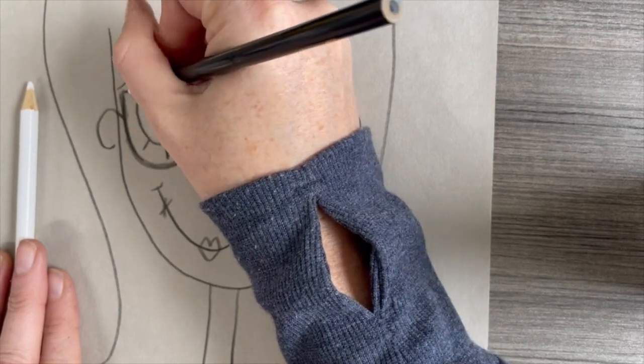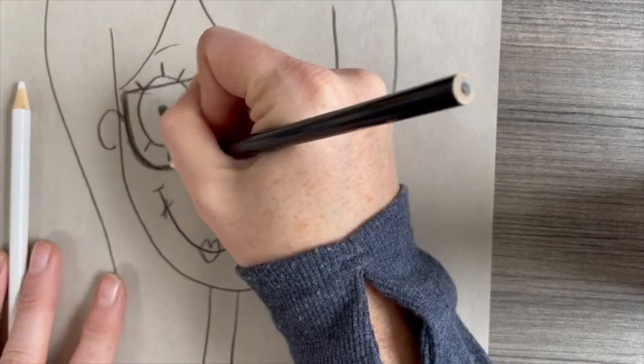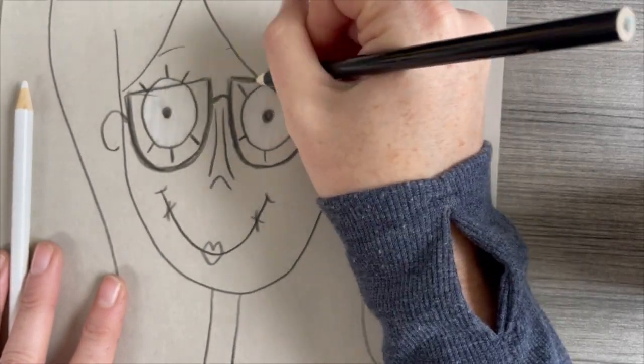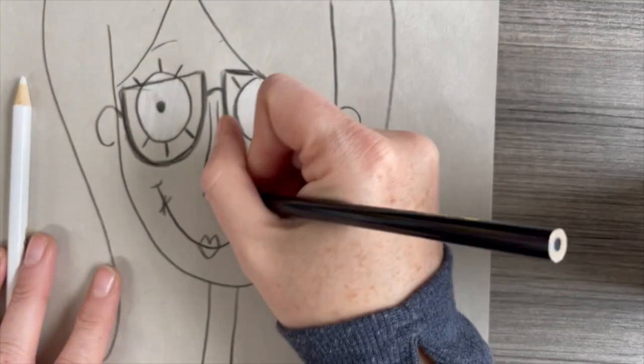Take your black colored pencil and darken some of the spots around the eye like glasses or the shape of the circle. Make that a little darker so the white really stands out against the black.